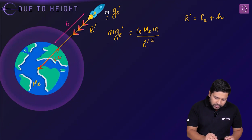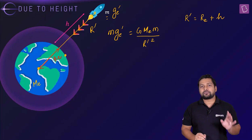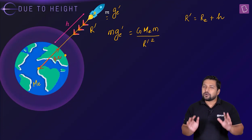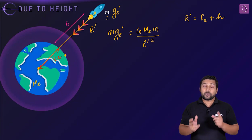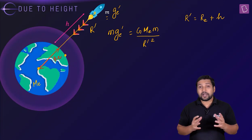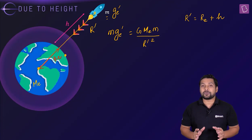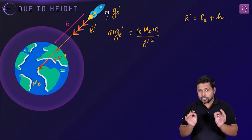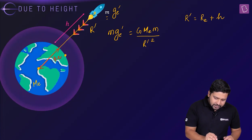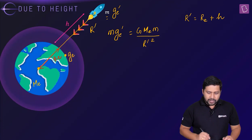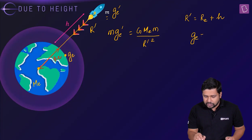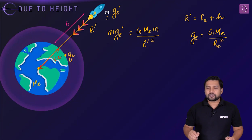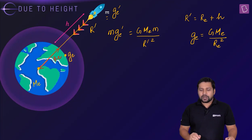We also know that on the surface of the earth, the formula for acceleration due to gravity is g_e equals G times M_e divided by r_e squared. This is the acceleration due to gravity on the surface.